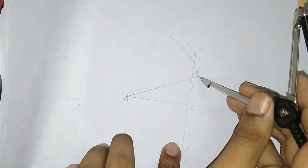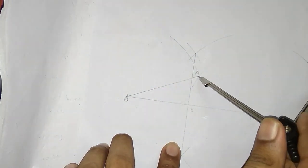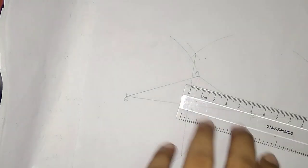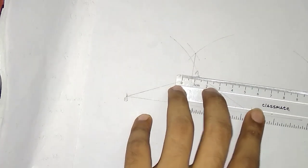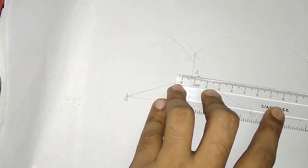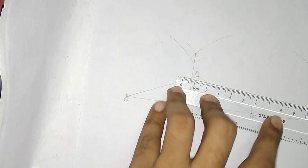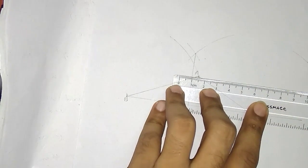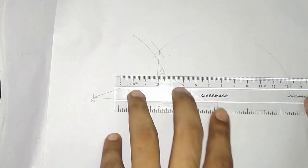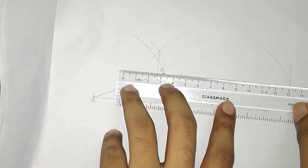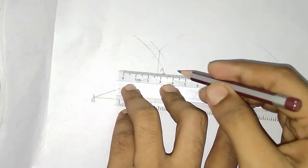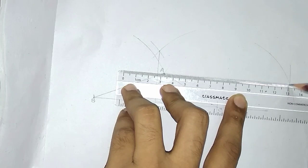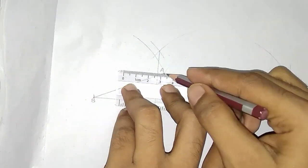By putting the compass on the opposite vertex, draw one arc here. Then just join these two points - the point of intersection and the vertex of the triangle. I am joining them.